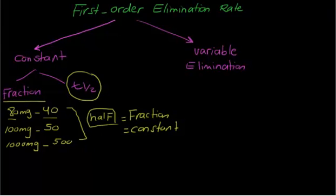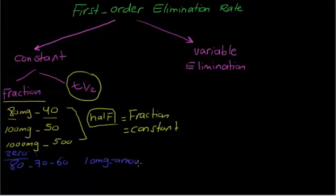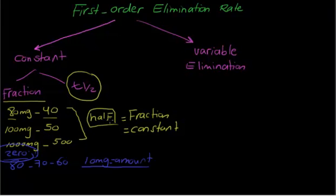Now, to contrast with zero-order kinetics: if you give 80 mg under zero-order, it goes 80 → 70 → 60, meaning 10 mg — the amount — is fixed. The amount was fixed in zero-order kinetics. While in first-order, the fraction is fixed — which is the half. Half is not an amount. The amount eliminated was 40 in one example, 50 in another, and 500 in the third. So the amount is not fixed, while the fraction — the half — is fixed and constant.